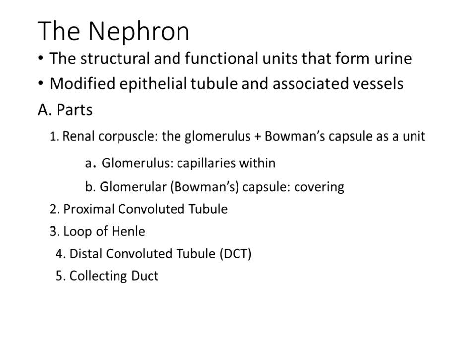The blood leaving the efferent arteriole is slightly more viscous because a small amount of plasma is lost. The glomerular capsule (Bowman's capsule) is made of two layers: a visceral layer and a parietal layer, with a small space in between where filtrate accumulates.